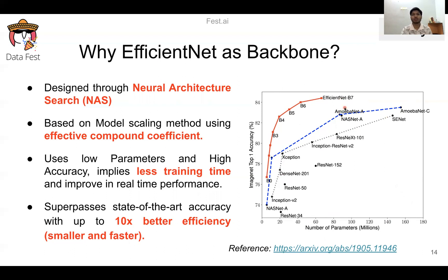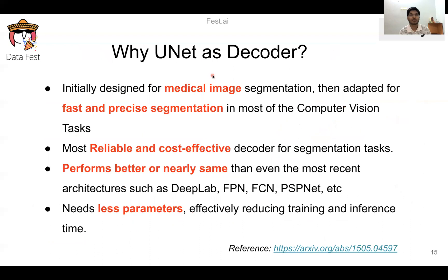Why UNet as the decoder? UNet was initially designed for medical image segmentation, then adapted for fast and precise segmentation in most computer vision tasks. It is the most reliable and cost-effective decoder for segmentation tasks, performing better or nearly the same as architectures such as DeepLab, FPN, FCN, and PSPNet, while having fewer parameters that effectively reduce training and inference time.